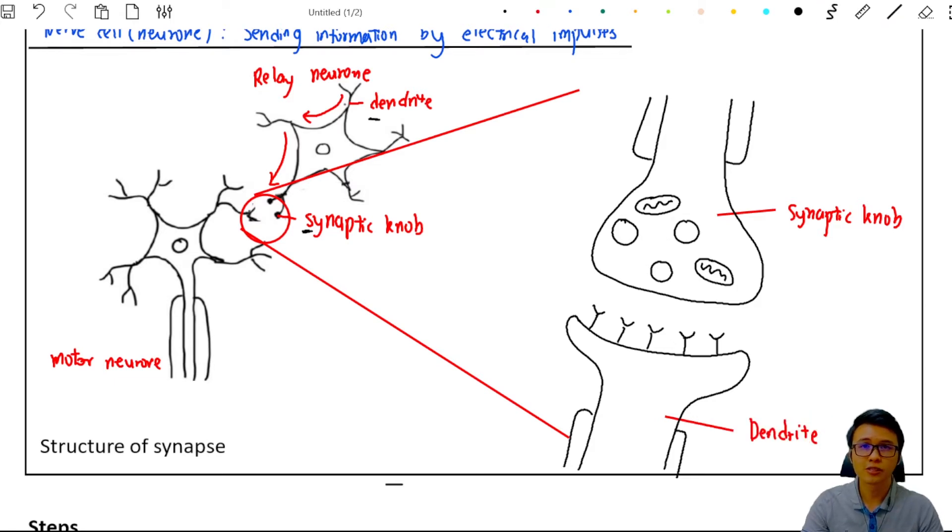Now, there's one thing that you guys need to know. Dendrite is always the structure that receives the information. For synaptic knob, it is the structure that always sends out the information. So the direction of the nerve impulse should be flowing in this way.